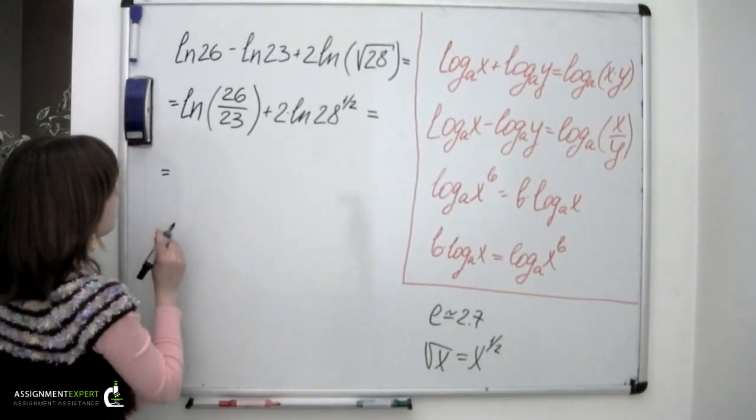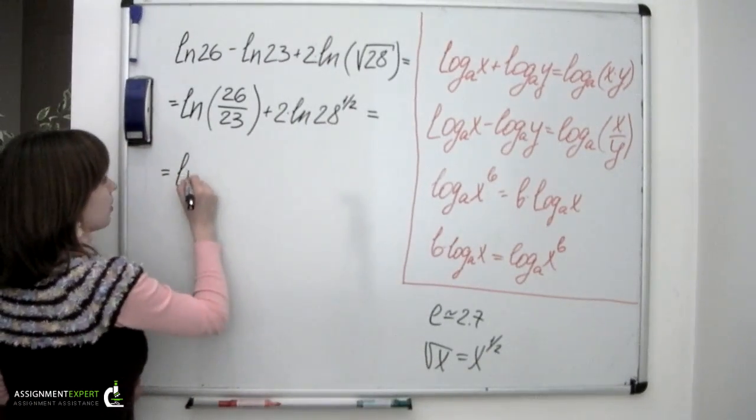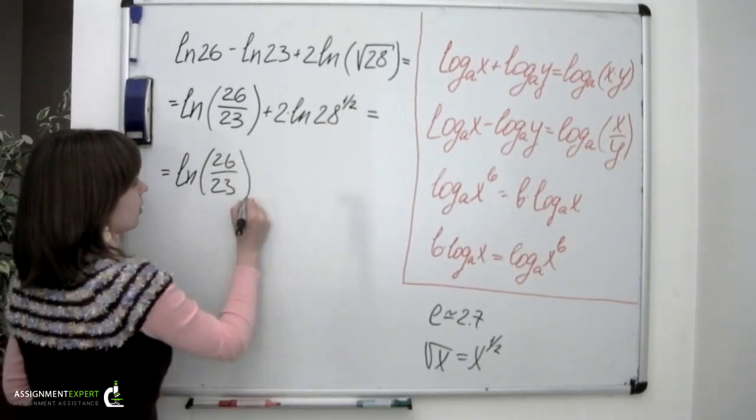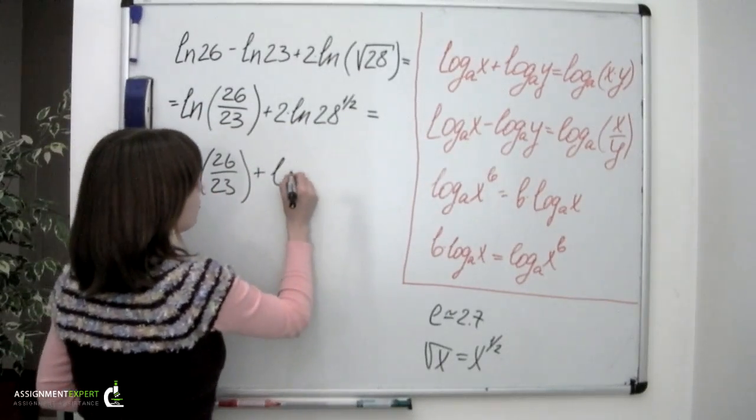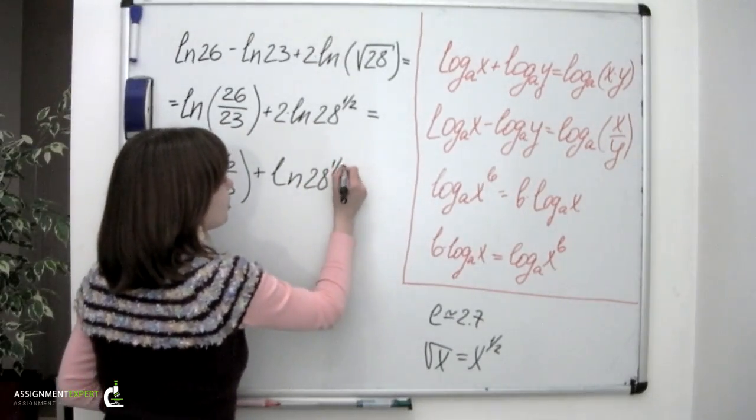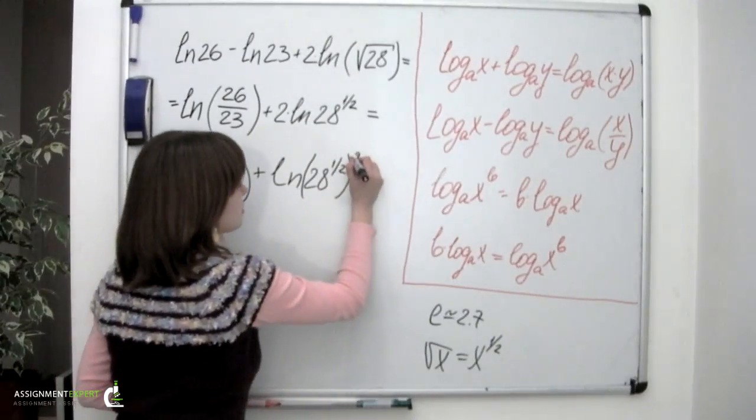We can now apply another formula, the last one. And have ln of 28 which was already raised to the power of one-half. And this all goes raised to the second.